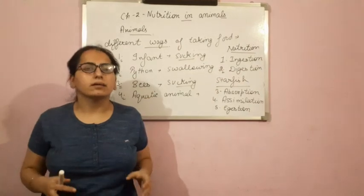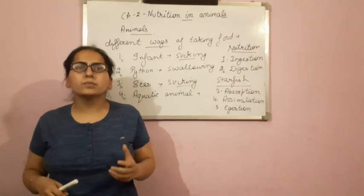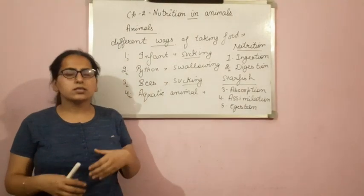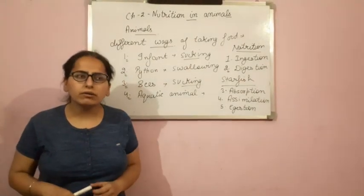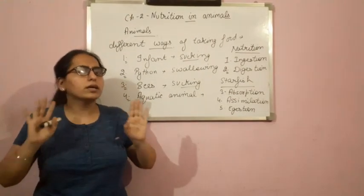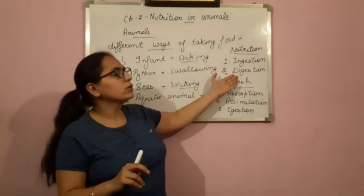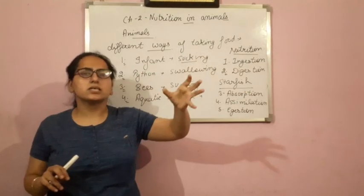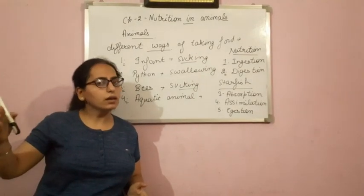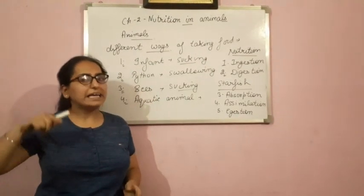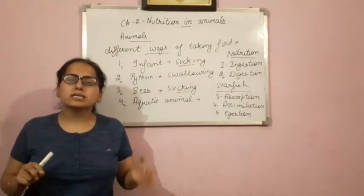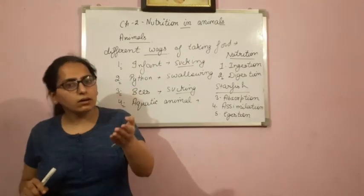Now digestion. Whatever food you are eating is very complex — complex means a kind of difficult structure that your body cannot use. Suppose you are eating carbohydrate; your body cannot use that carbohydrate directly. So in digestion, the complex substances of food are broken into simple substances that can be used by your body. Like carbohydrates, they are broken down into simple sugars like glucose.